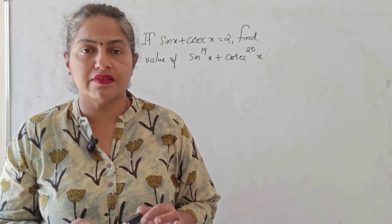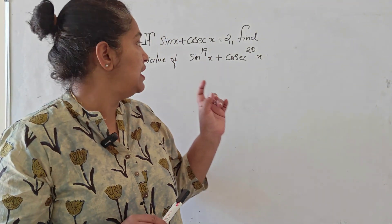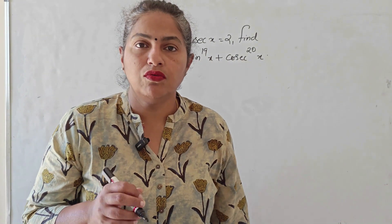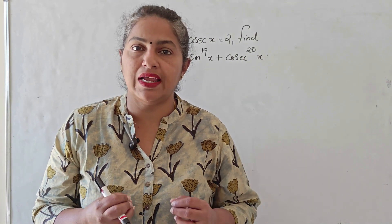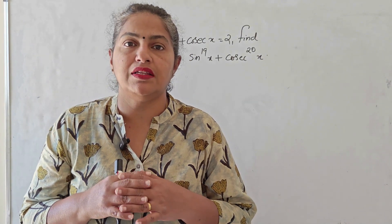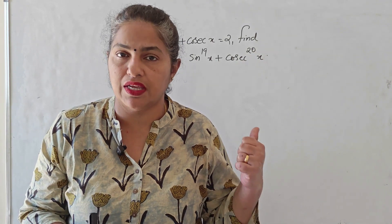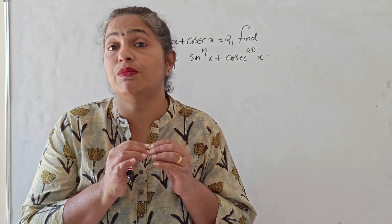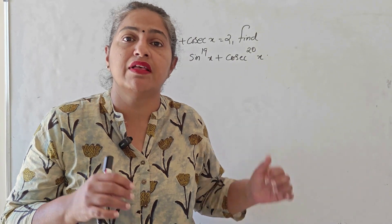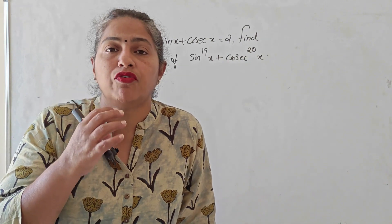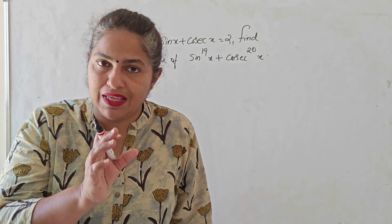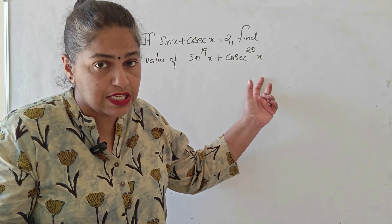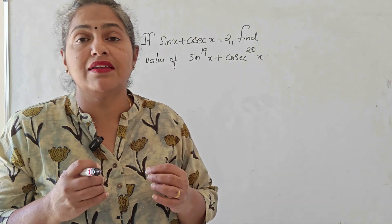We have another three-marker: if sin x + cosec x = 2, find the value of sin¹⁹ x + cosec²⁰ x. When you have sums like this, if you try to individually find sin¹⁹x or cosec²⁰x, the value will have to be small, meaning sin x has to be a specific value — so there is an easy way to find sin x from the given data.